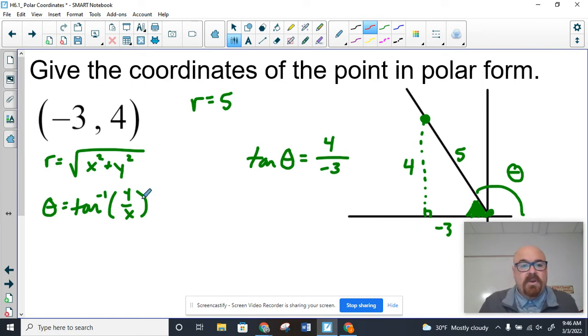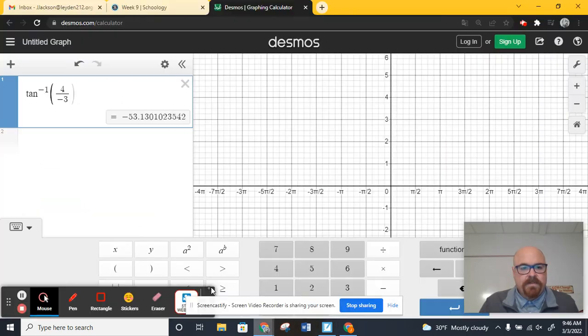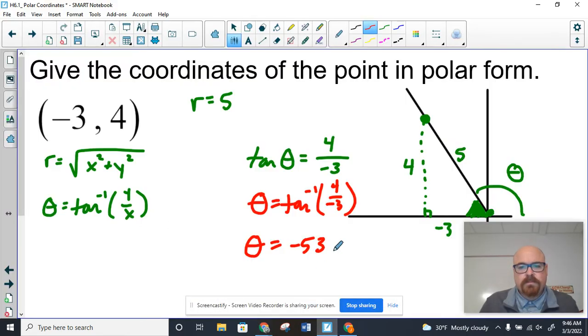So I've told you not to trust this formula and that you need a picture for reasons like this. If we take the inverse tangent like we just did in Desmos and we get negative 53 degrees... What was it? Negative 53.1... Yeah, we'll say 0.13. Is this angle negative 53 degrees? No.